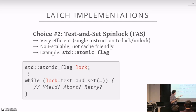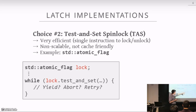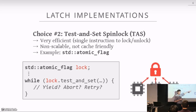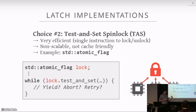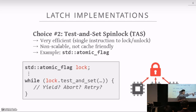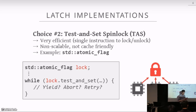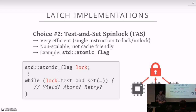Another problem with test-and-set spin locks is they're not cache-friendly. With a single lock and three CPU cores all spinning, every compare-and-swap attempt requires sending an invalidation or fetch message to grab that memory location into the local L1/L2 cache, then attempting the swap. Under high contention, threads keep spinning, generating significant interconnect traffic on the chip as the memory location bounces around.